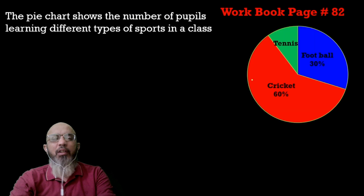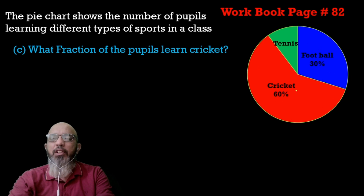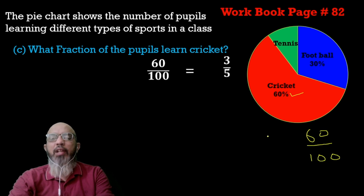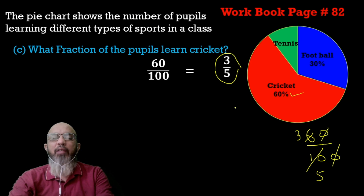The next part: what fraction of the people learn cricket? The percentage is 60, so the fraction is 60 over 100. If we simplify — zeros cancel and dividing by 20 gives us 3 over 5. So the answer is 3/5.